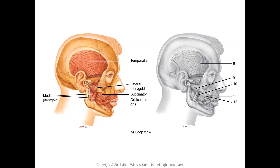Number seven is the buccinator muscle. Figure 14.2d shows a deep view after superficial muscles have been removed, with the mandible partially dissected. The fan-like muscle over the temporal bone near the ear is the temporalis muscle. The pterygoid muscles — medial and lateral — are also used in mastication. The lateral pterygoid carries out the side-to-side movement of the jaw, moving food from right to left.